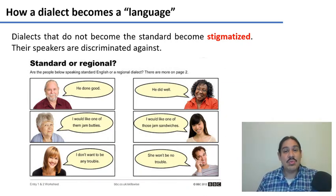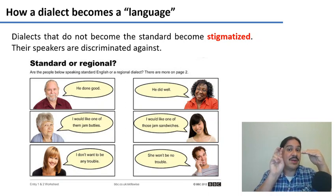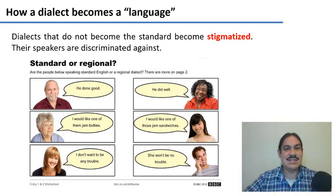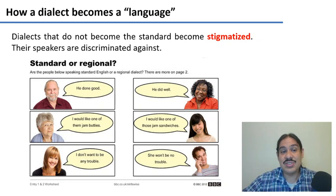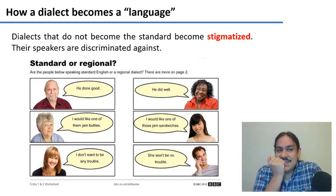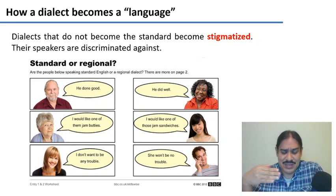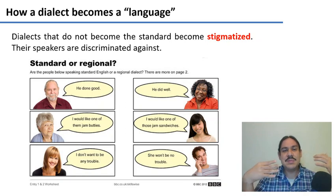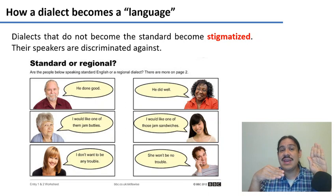Sadly, the people with more power might begin to stigmatize the way other people speak, wanting to keep their status as speakers of the 'better' language. They can run campaigns saying other speakers sound wrong or uneducated. Look at these examples from English: 'He done good,' 'I would like one of them jam buddies,' 'She won't be no trouble.' You've been told not to speak like this — but take a moment to think about why. Those sentences communicate the exact same meanings and are perfectly well-structured sentences in English. The only reason we consider them wrong is because we've assigned prestige to one dialect, with no linguistic basis.